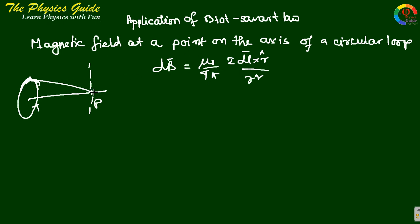In our case, we have to find the magnetic field at a point on the axis. Let P be the point, and this is the current loop with current circulating anticlockwise. Let there be a small element dL, with point P at distance x, and the distance between P and dL equals R.